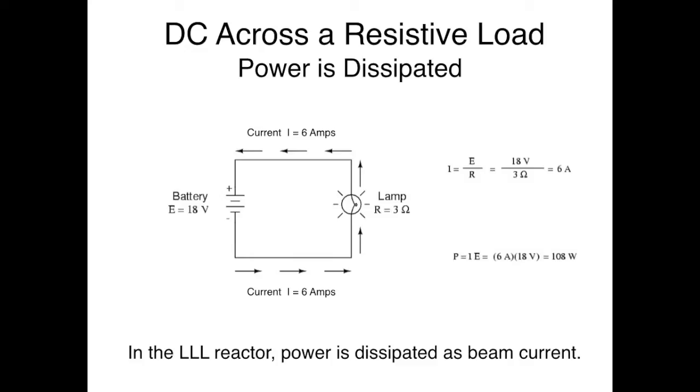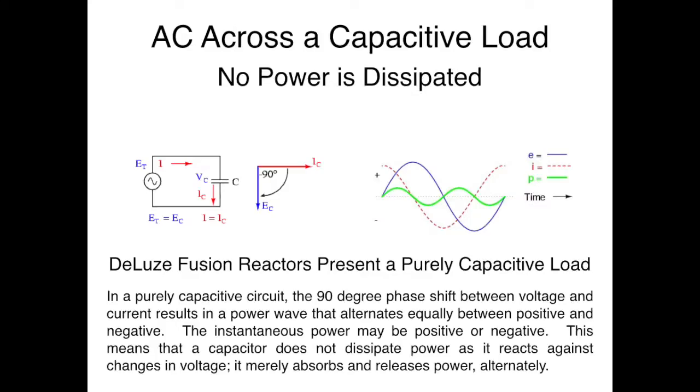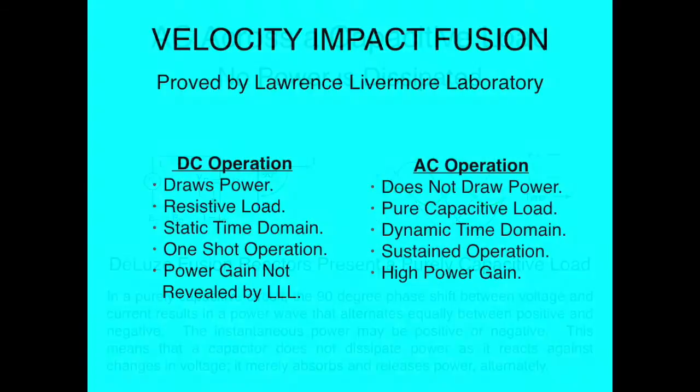With DC operation drive power is dissipated across the resistive load. With AC operation drive power is placed across the capacitive load and power is not dissipated. This provides greater power gain and allows sustained continuous operation.